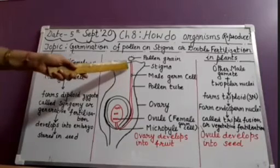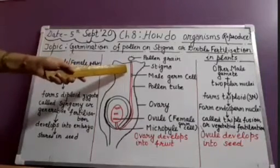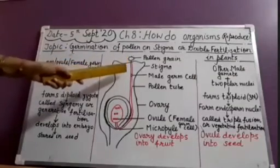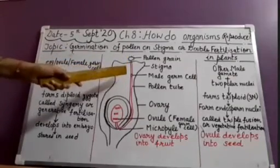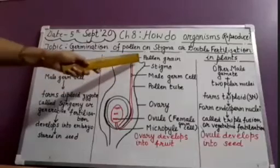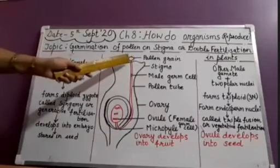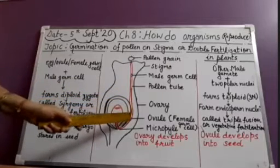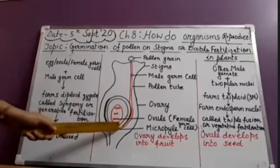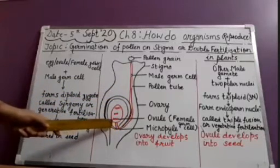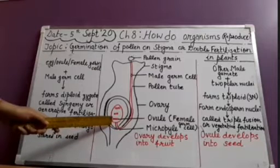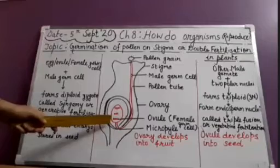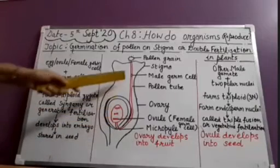The stigma produces a sticky substance such that the pollen grain gets stuck over it. Due to this sticky substance, the pollen grain gets nourishment and germinates, developing a pollen tube. This pollen tube, which I have shown in red color, travels to the ovary and enters inside where the ovules are.